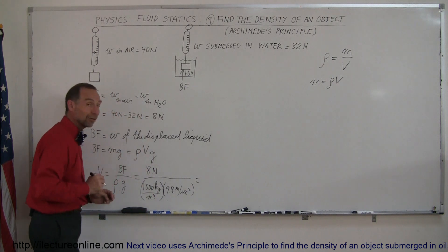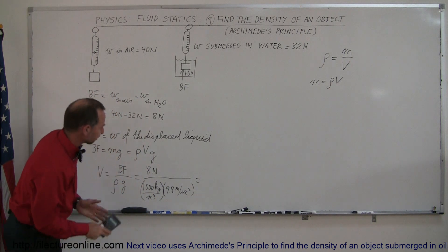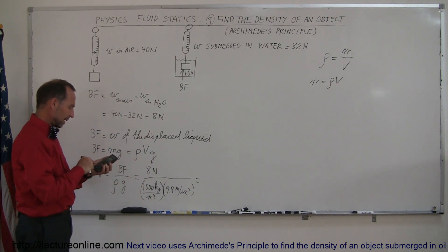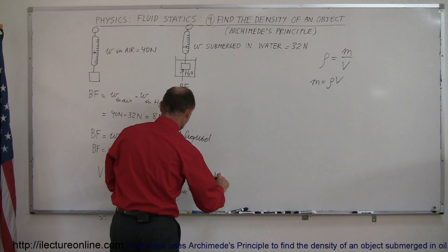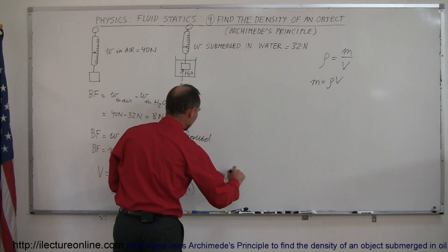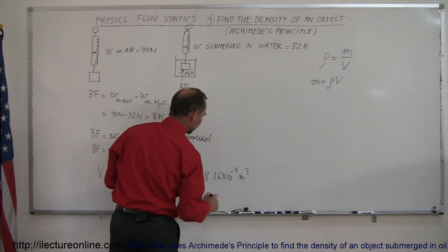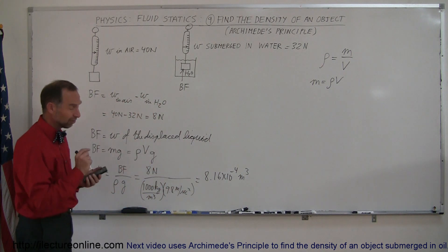So 8 divided by 1,000 divided by 9.8 is equal to 8.16 times 10 to the minus 4, and of course the standard units for volume is cubic meters. So it's a small object.